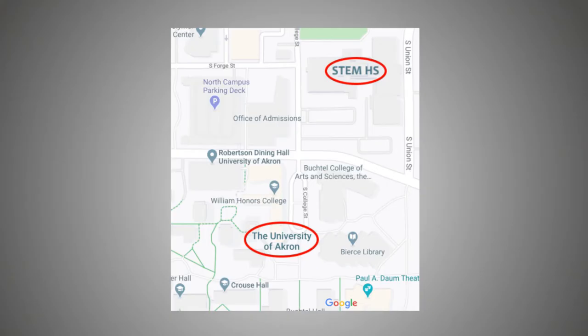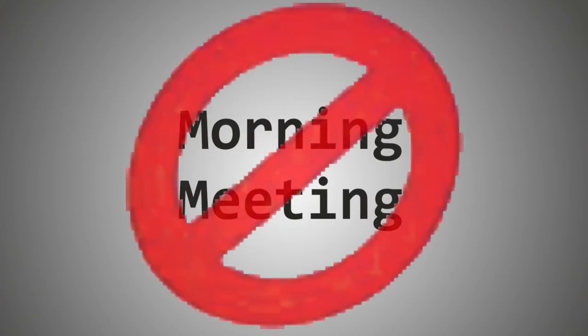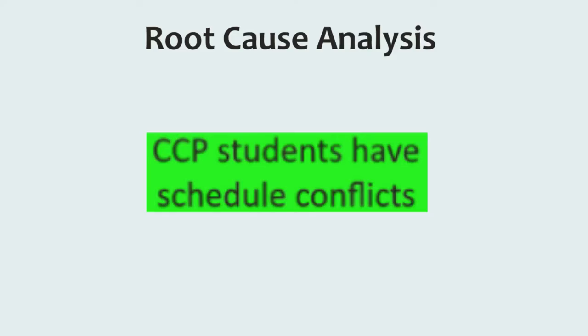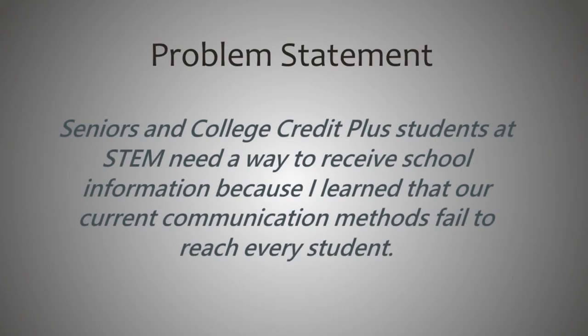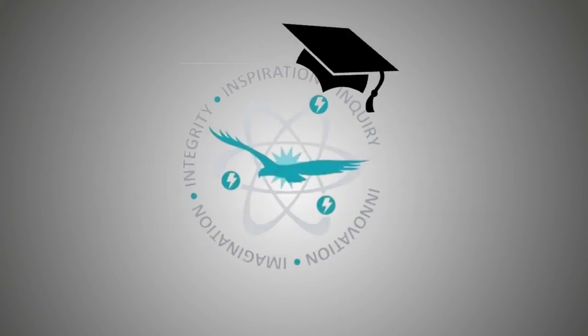This is also the exact problem that I had that I shared at the beginning of the video, so I can use myself as a user reference, making it easier to know whether my solution actually solves the problem. With all of this in mind, I had to formulate a new problem statement to accommodate my new problem in question: Seniors and College Credit Plus students at STEM need a way to receive school information, because I learned that our current communication methods fail to reach every student.